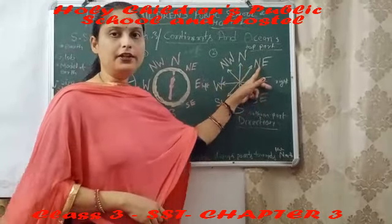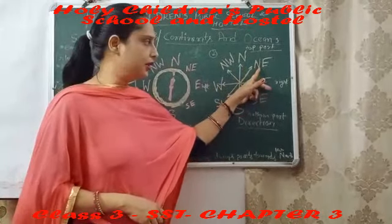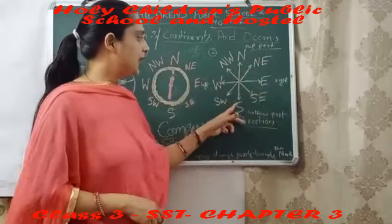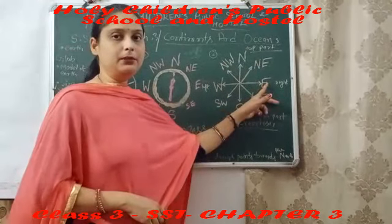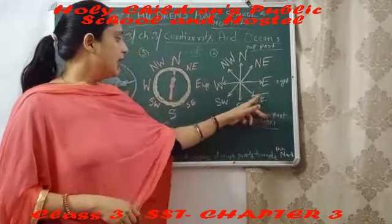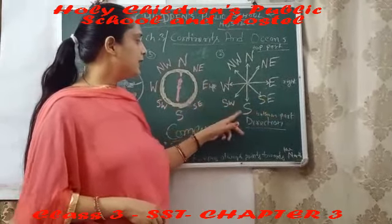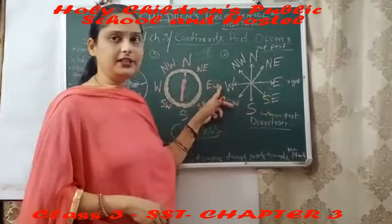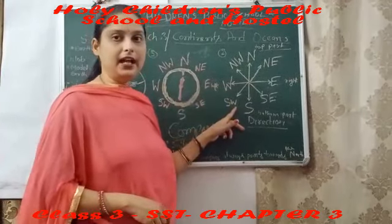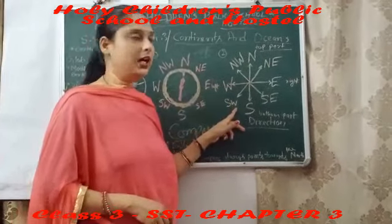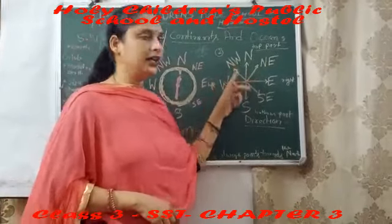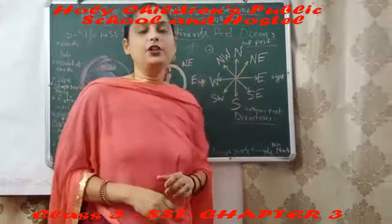The direction which comes between north and east is called the northeast direction. The direction which comes between south and west is called the southwest direction. And the direction which comes between north and west is called the northwest direction.